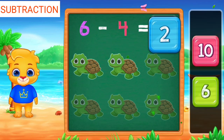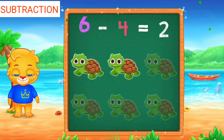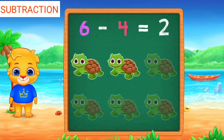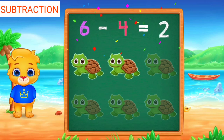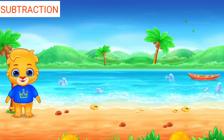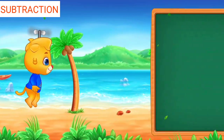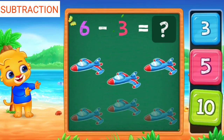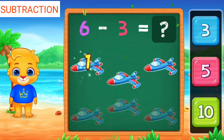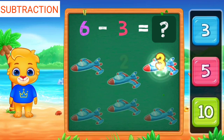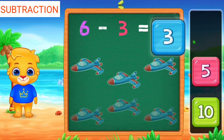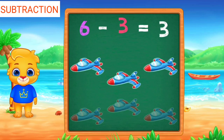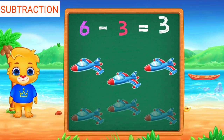One, two, three, ten minus two. Six minus four equals two. One, two, three, three, six minus three equals three.